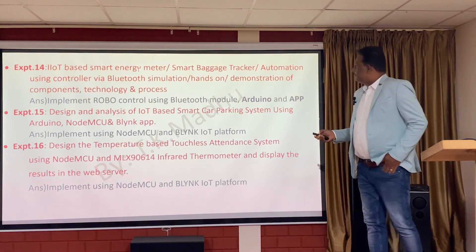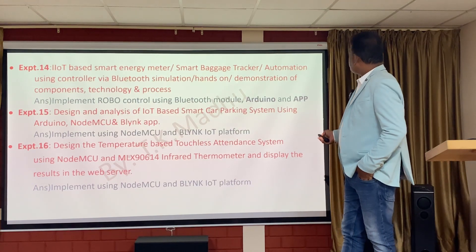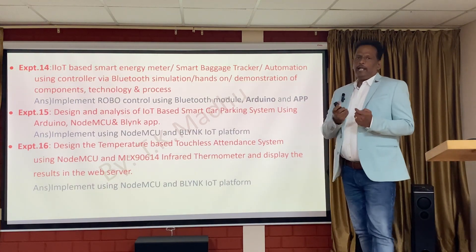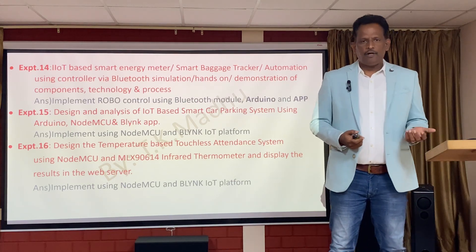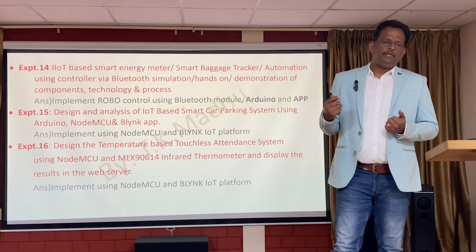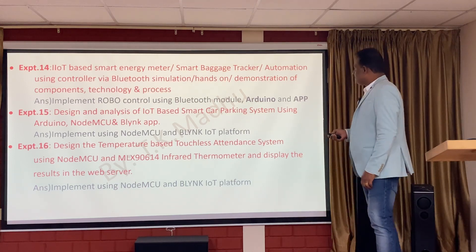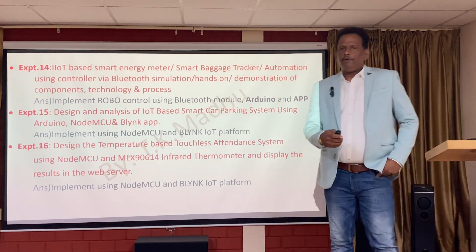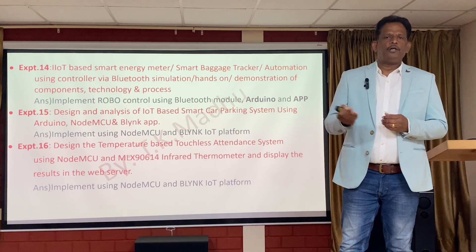For other experiments, IoT-based energy meter, smart baggage tracker, or automation using Bluetooth — simulation or hands-on demonstration of components, technology, and process. Using a mobile app — which can be downloaded from the app store — like Robo control or making lights on and off using Bluetooth, not IoT. The student will come to know that without Wi-Fi, using Bluetooth, we can control devices or do robot control. We are going to use an Arduino board to control the robot along with a custom app for lights, fan, and Robo control.